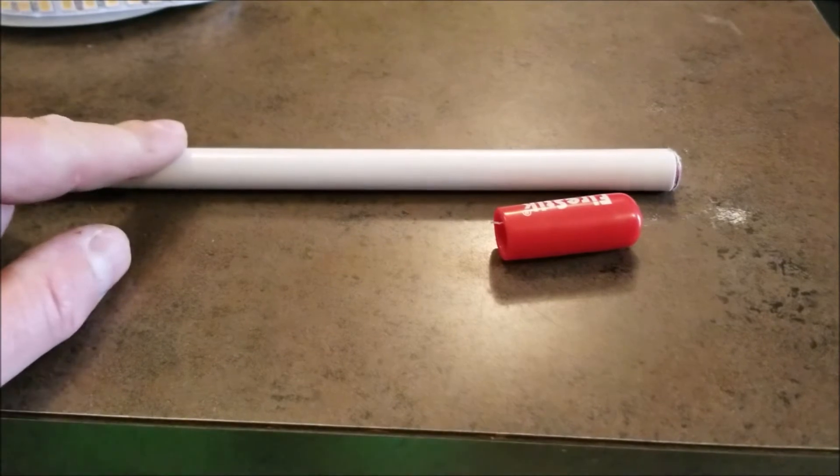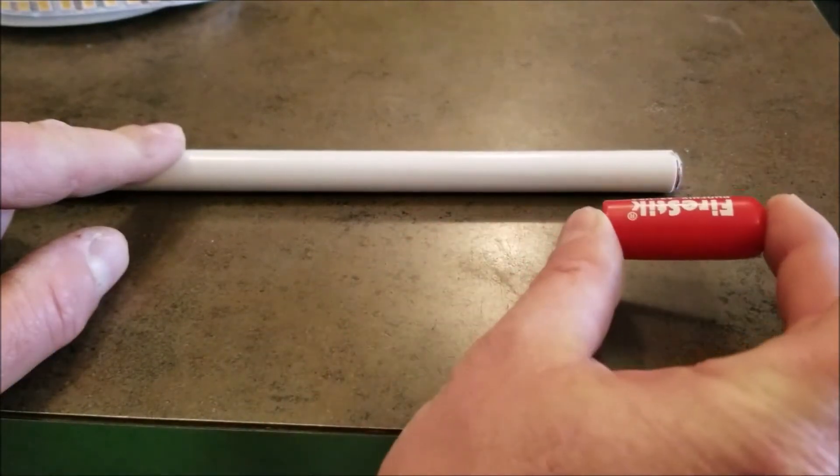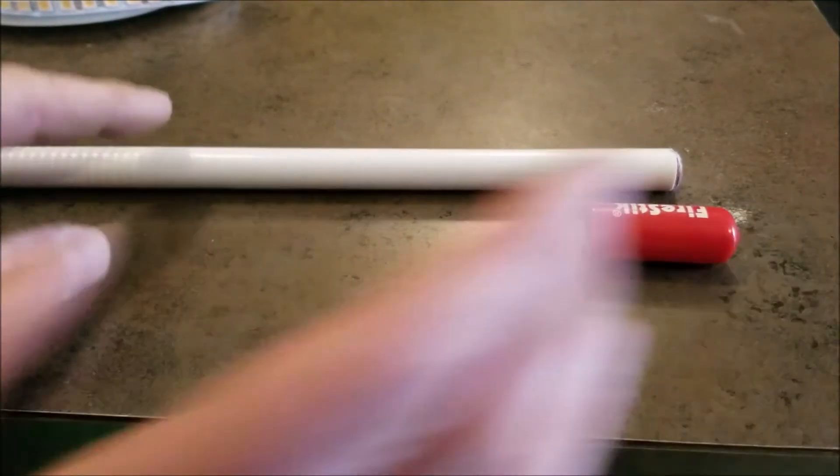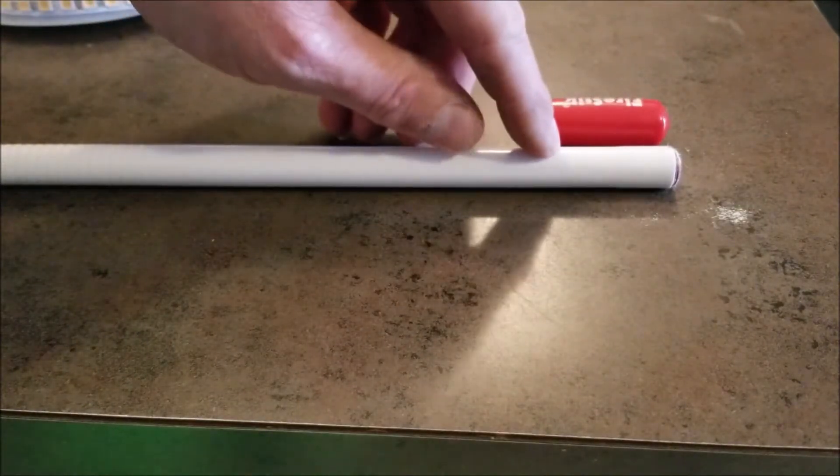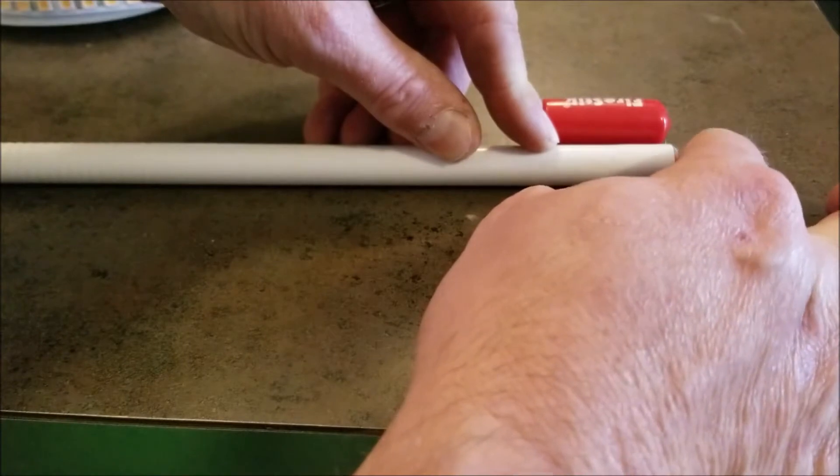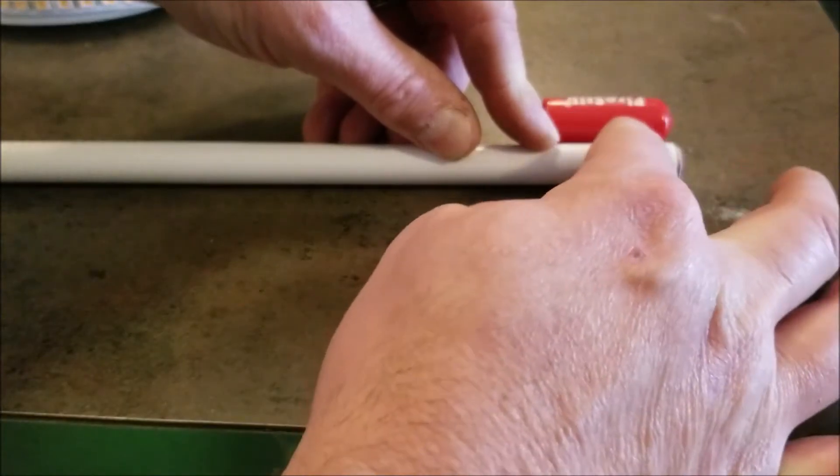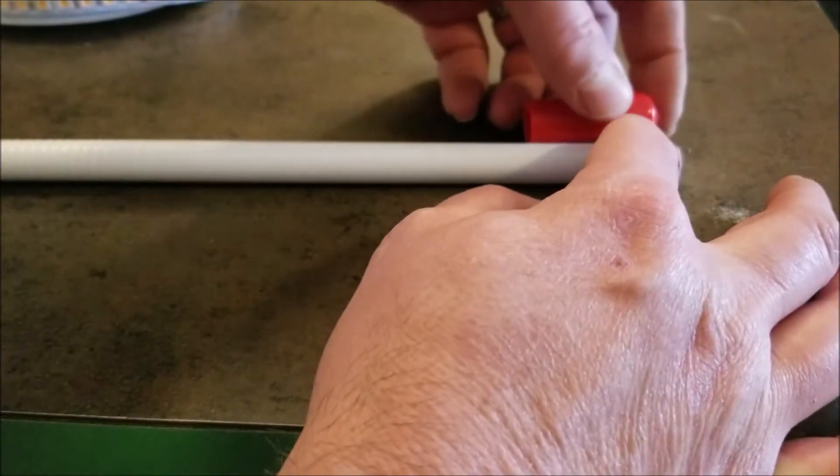Before you get started wrapping the CB antenna with the LED lights, go ahead and remove the top cap. We're going to wrap the lights to about right here, then have the shrink wrap tubing go all the way to the tip, shrink wrap it right here, and slip this back over. That way it creates a watertight seal.